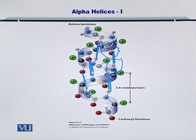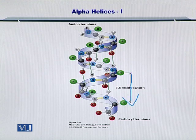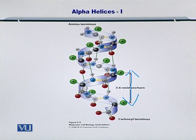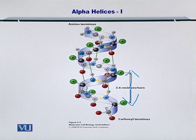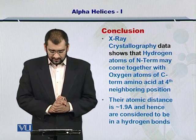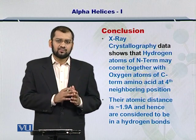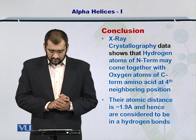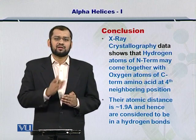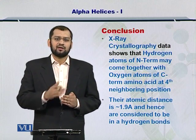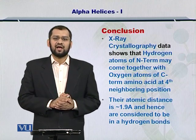An important point to note here is that this repetition occurs exactly 3.6 residues per turn. This is an indication that after every fourth amino terminal, the carboxyl group makes a hydrogen bond with that N-term and therefore contributes to the formation of the helix. In conclusion, the X-ray crystallography data shows us that the hydrogen atom of the N-term may come together with the oxygen atom of the C-term, and this should be at the fourth position immediately following the N-term. If this happens repeatedly, then an alpha helix is formed.